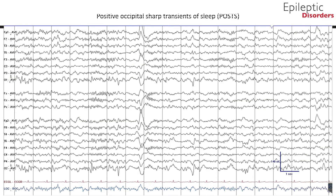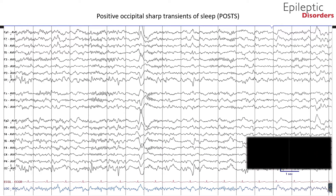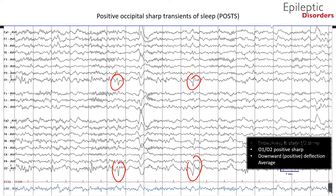This is the same EEG shown in average montage, and clearly here you can see positive deflections on the EEG best appreciated in O1 and O2 channels. They are positive, they are occipital, they are sharp, and they occur during sleep. Hence, the name POSTS.